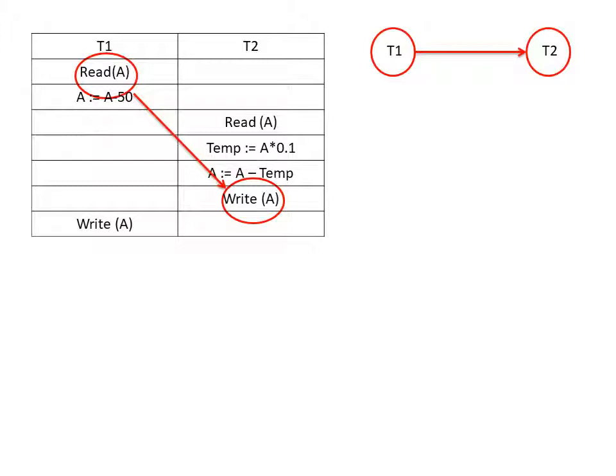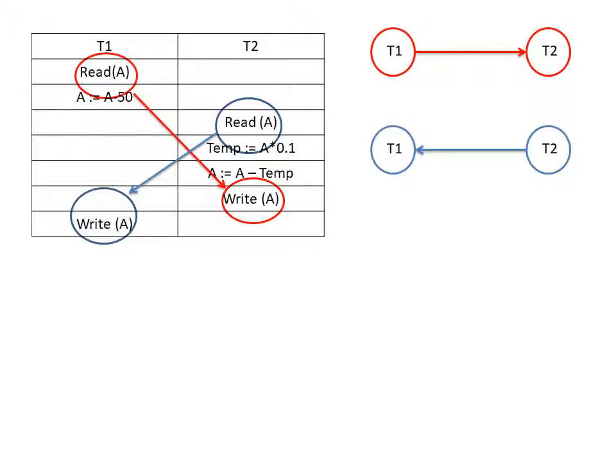Now let's check for other read-write pairs. We find read A in T2, and we search for write A in T1 — yes, write A exists in T1. So we construct an edge from T2 to T1, giving us another arrow pointing from T2 to T1.